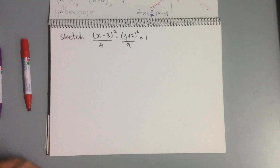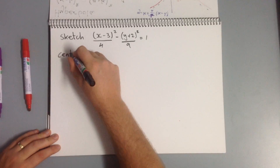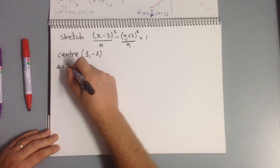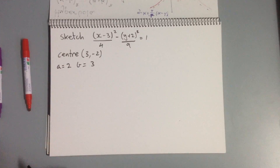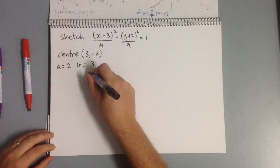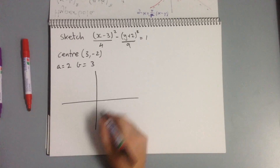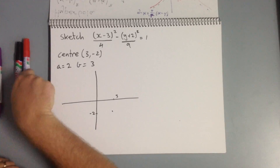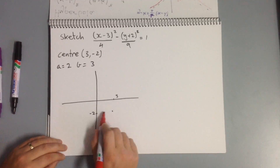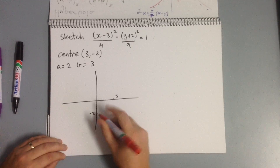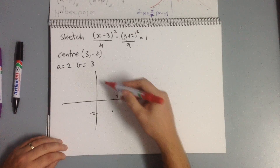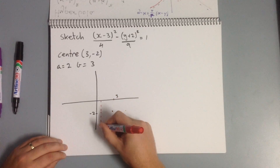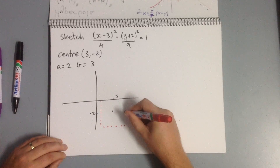What's our important information? Well, our center is at (3, negative 2) — we switch the signs. A is equal to 2, and b is equal to 3. So now we can sketch our graph. Our center is at (3, negative 2). We then draw our rectangle: we go 2 units left and right, so from negative 1 to 5 horizontally. And our 2b units up and down: so we go up to 3 and down to negative 5. Of course if you don't draw your rectangle correctly, you're going to have trouble drawing your asymptotes correctly.